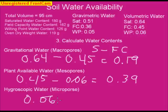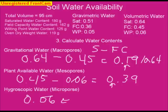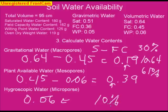To calculate the percent of each pore type, divide each water content value by the total porosity of 0.64. This shows that 30% of pores are gravitational, 61% are plant available, and 10% are hygroscopic. In conclusion, we can see how volumetric and gravimetric water contents are calculated and how they relate back to the different types of pores in our soil.